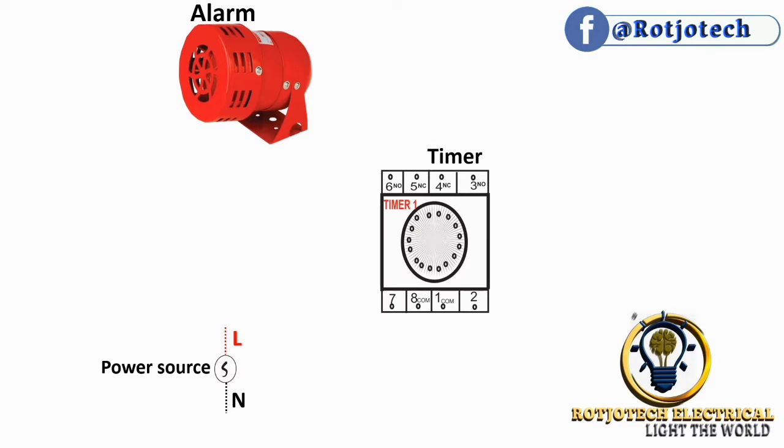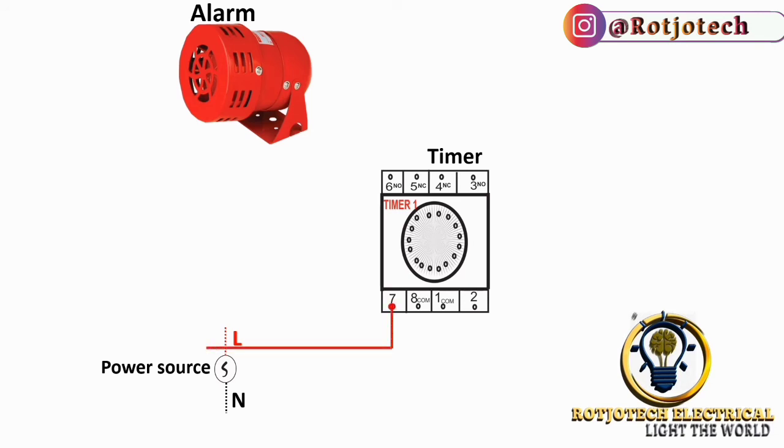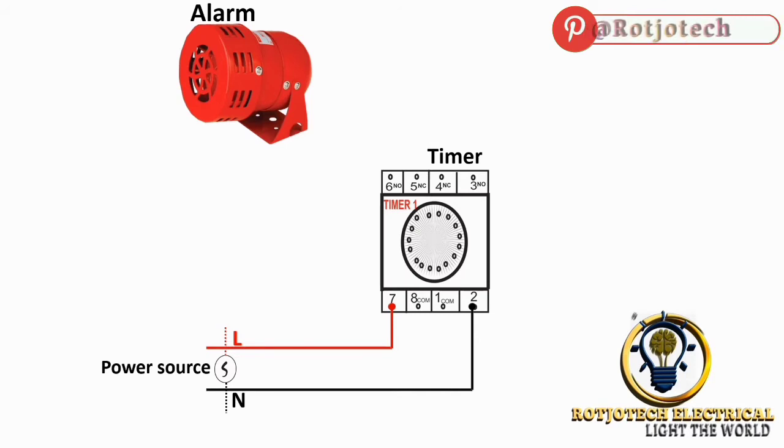Okay, let's start the connection. First, we are going to connect the live to terminal number 7. And after that, we are going to connect neutral to terminal number 2. As we have powered terminal number 7 and terminal number 2, that means we have powered our timer. This timer can energize.